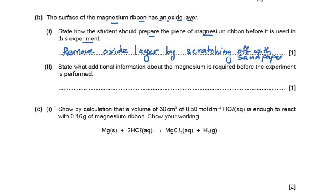The next part asks what additional information about the magnesium is required before the experiment is performed. We need to know the mass of magnesium used. This is necessary because we need to know what amount or concentration of HCl is required for the complete reaction — knowing the mass allows us to calculate the volume or concentration of HCl required.